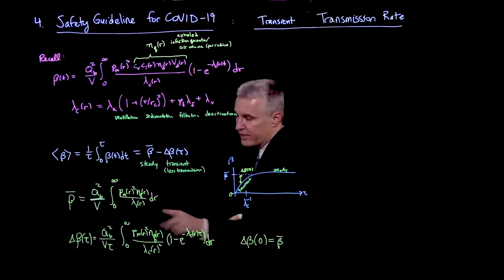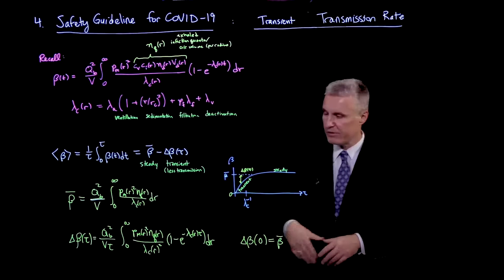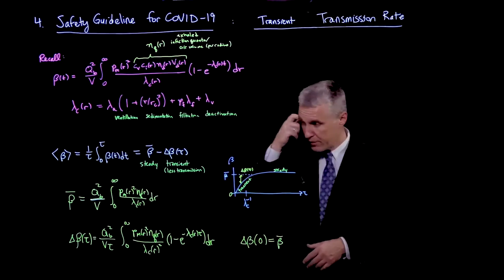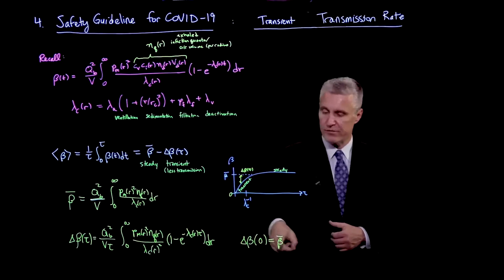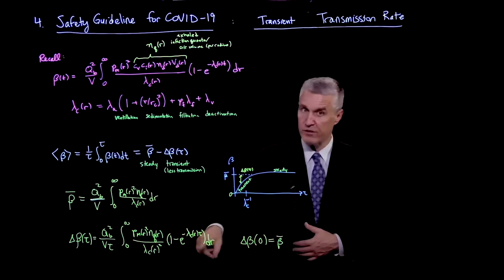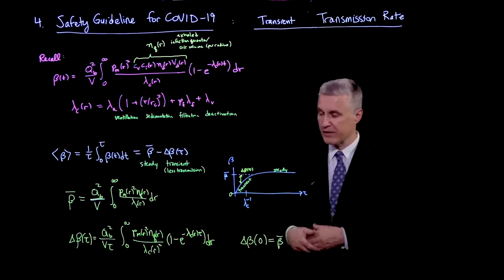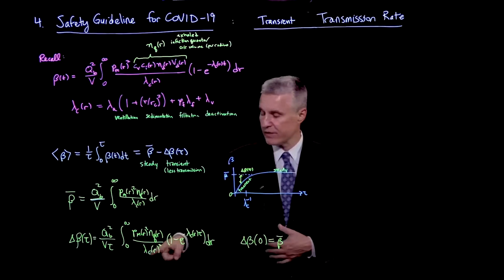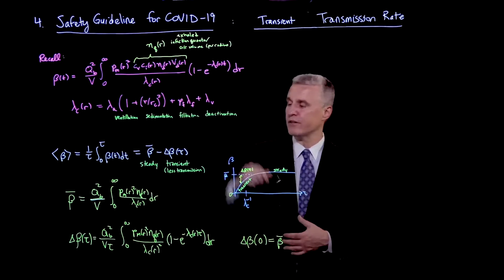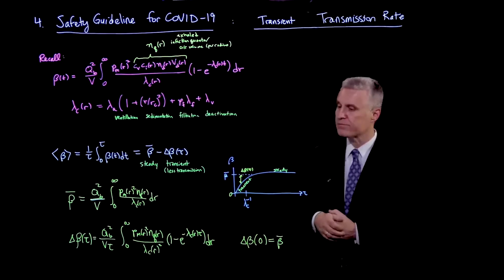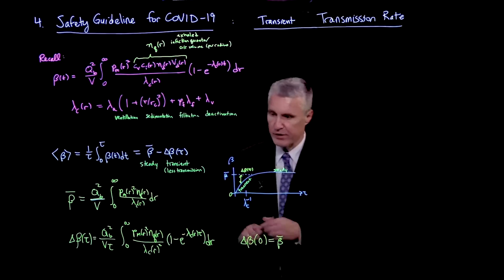And so that allows you to get, instead of lambda c here, you get a lambda c squared. And you get the following expression for the delta beta. It may not be obvious looking at it, but if you take the limit of tau going to 0, this expression leads to just beta bar. So delta beta of 0 is beta bar. And that's because if you take this exponential here and you go to small times, you can linearize that and find it's lambda c t. So it cancels one factor of lambda c, one factor of tau. And you end up with just a single lambda c as above.